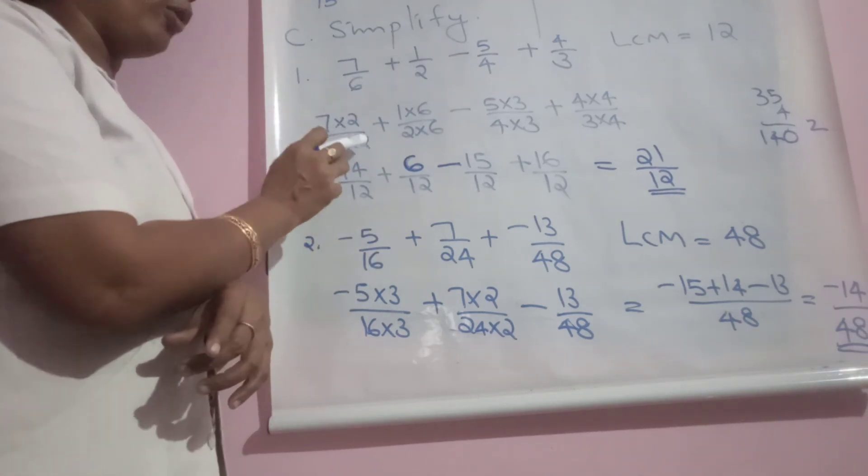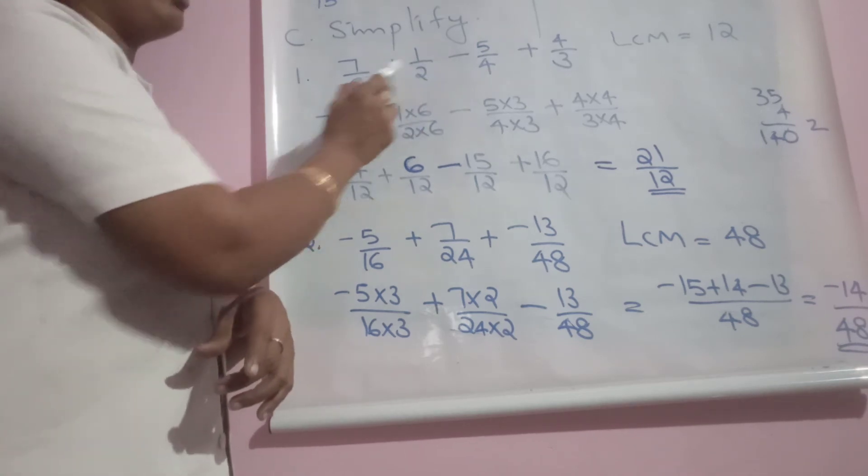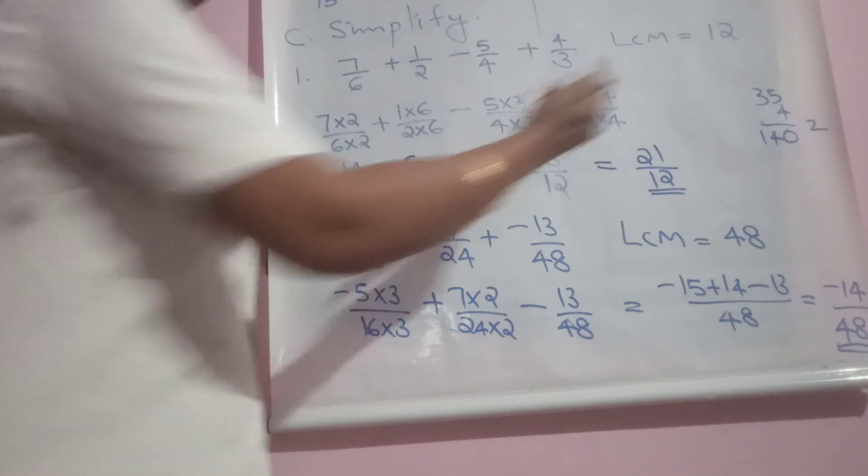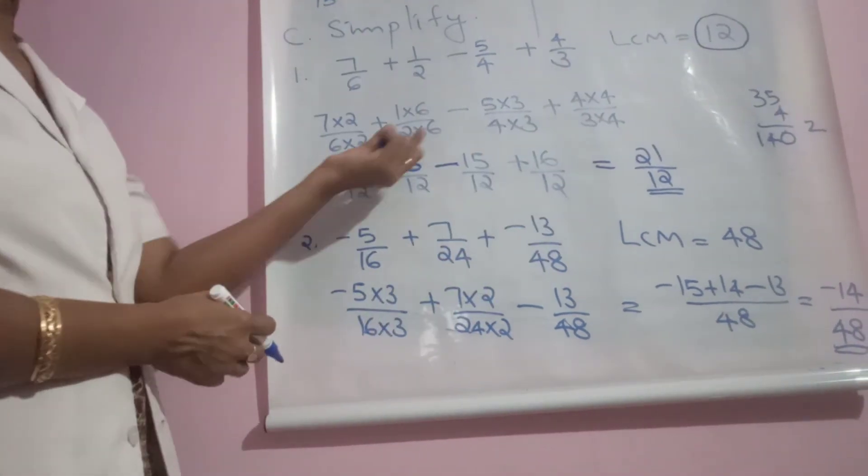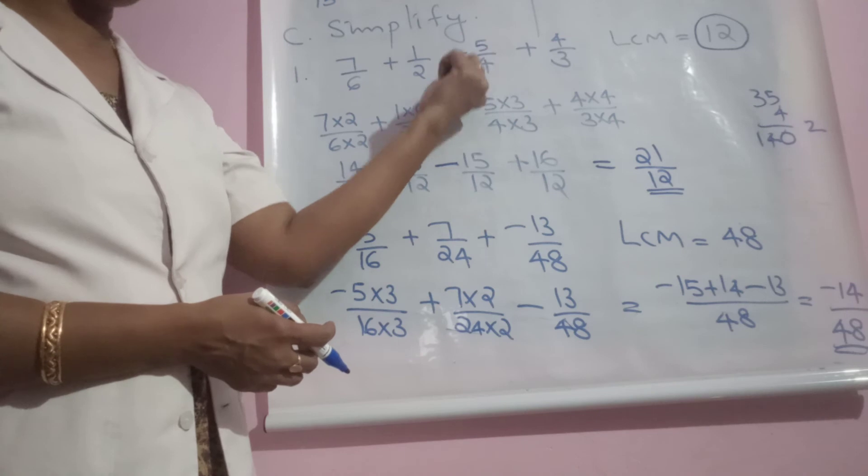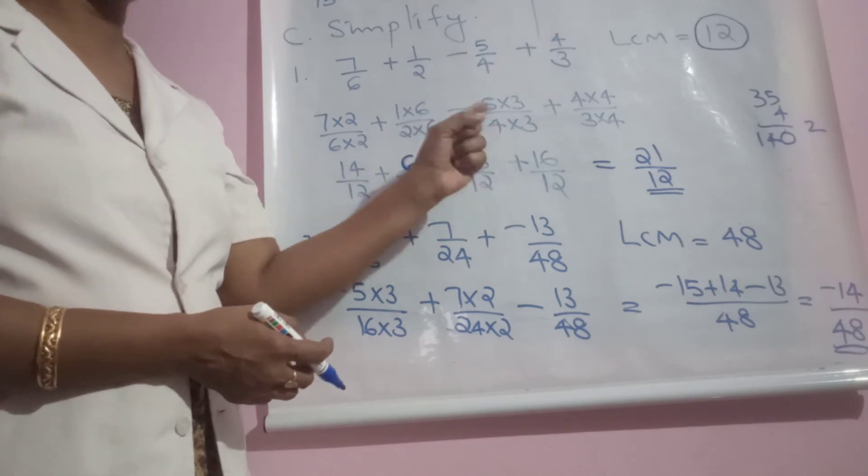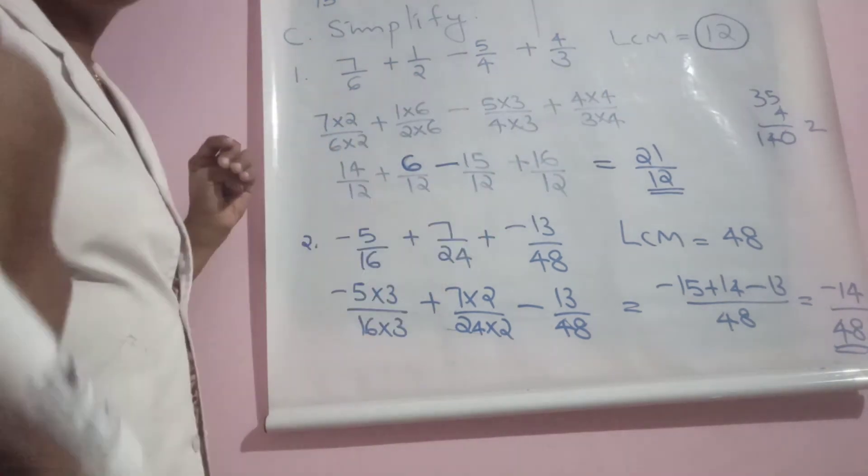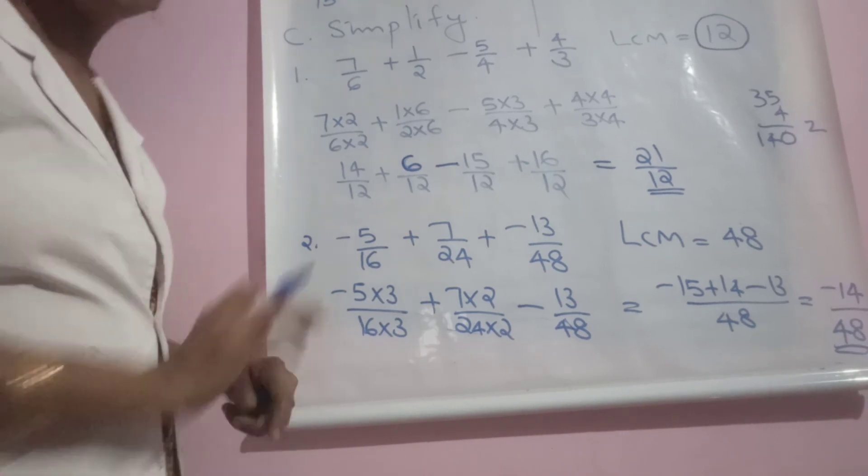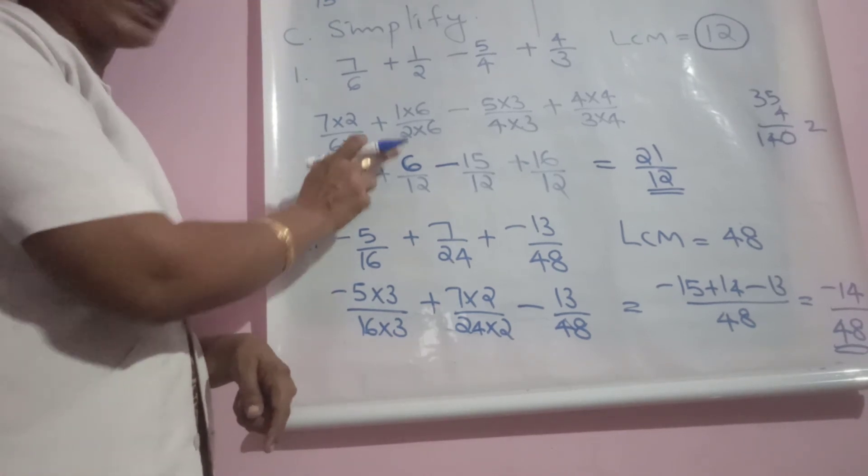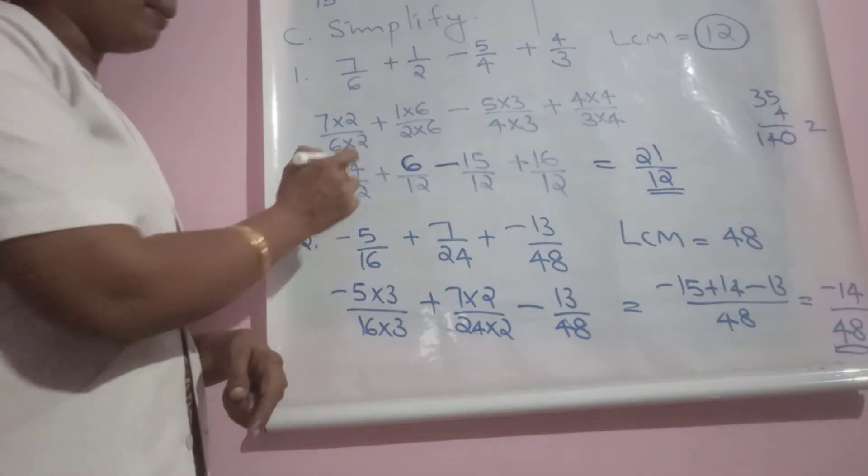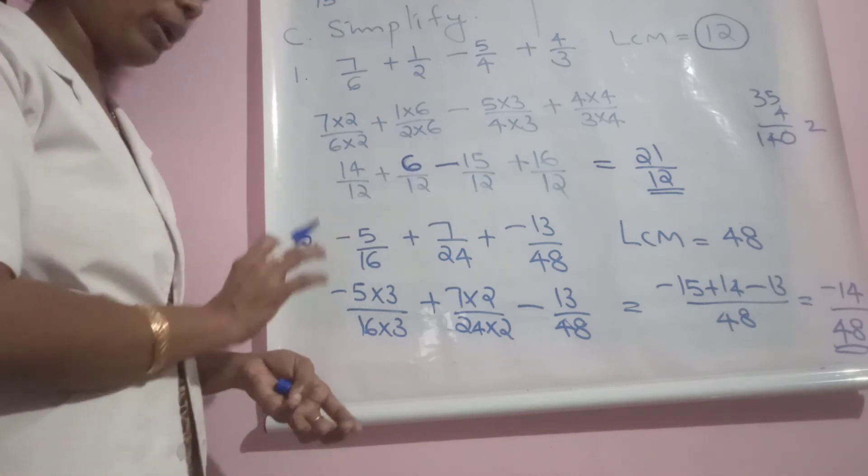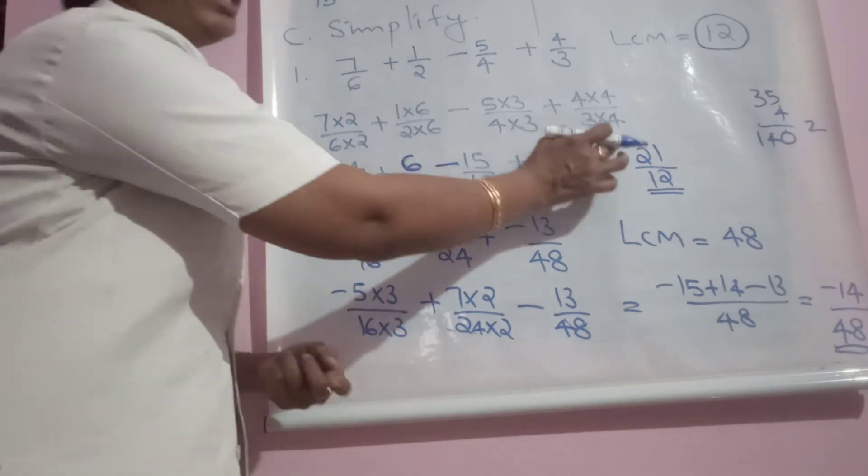How do you make 6 as 12? Into 2. So multiply both numerator and denominator by 2. Second rational number denominator is 2, multiply by 6. Third denominator is 4, multiply by 3. Denominator 3, multiply by 4. Look at the numerators only: 14/12, 6/12, minus 15/12, plus 16/12. For positive numbers you add, then subtract minus 15 from it. 36 minus 15 gives us 21/12.